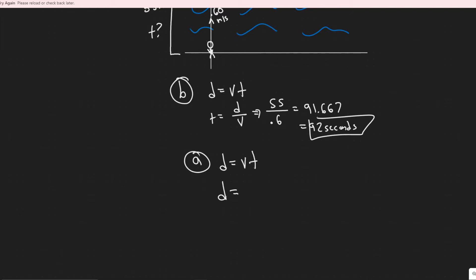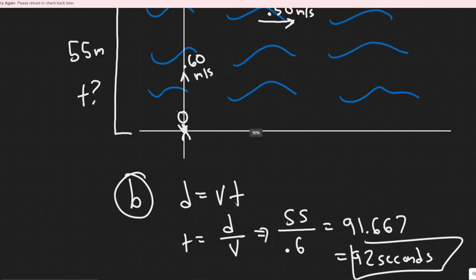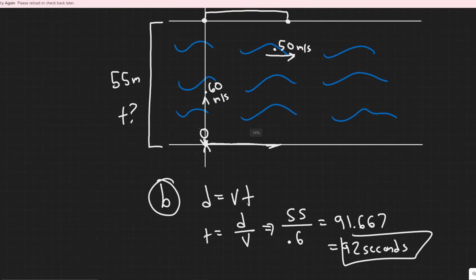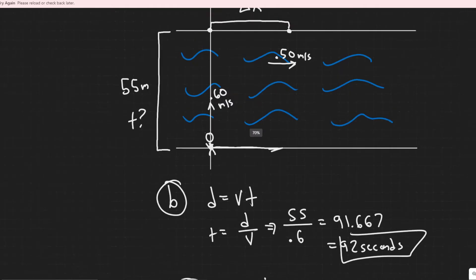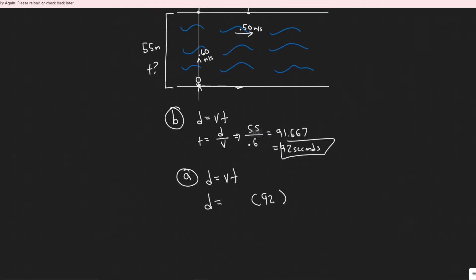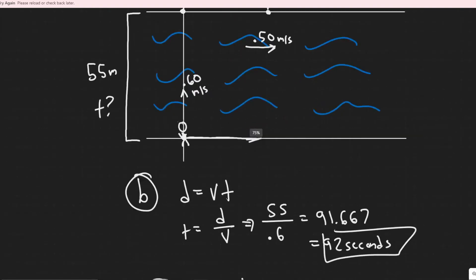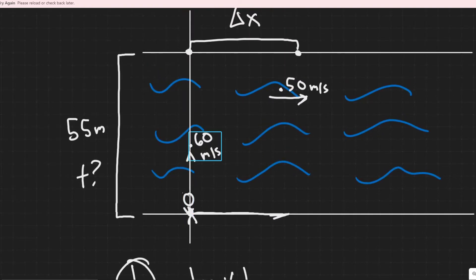So the distance she's going to travel is what we're trying to find. We're trying to find the distance she travels in this x in the amount of time it takes her to reach the other side. And luckily we found what time that is. So we know the distance is whatever the velocity is multiplied by the time which is 92 seconds. She's going to be traveling or being pushed by the river in this x for 92 seconds, because that's the amount of time she spends in the river from one side to the other.